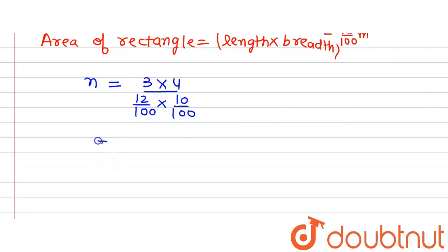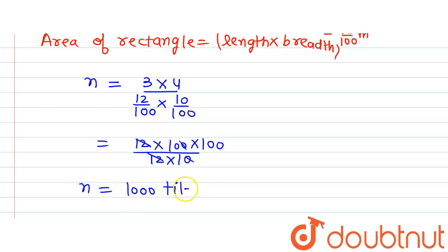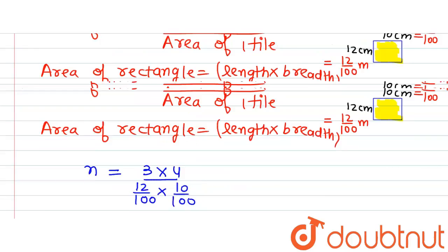Solving this: 3 multiplied by 4 is 12. The 100 × 100 from the denominator goes to the numerator, giving 12 × 10000 divided by 12 × 10, which equals 1000. So 1000 tiles will be required to cover the wall.